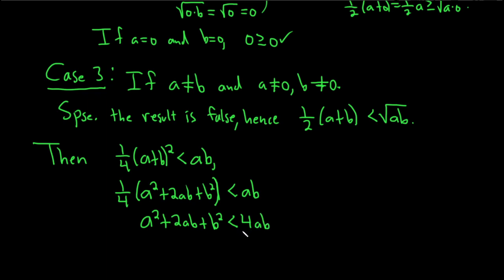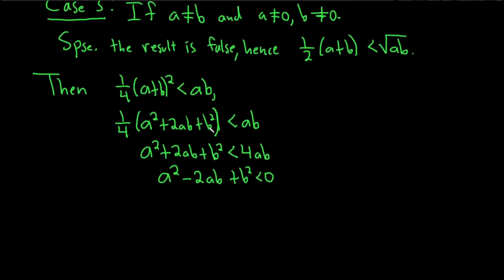Then we can subtract 4ab from both sides. That gives us a²-2ab+b² less than 0. This actually factors. This is a perfect square trinomial. This is (a-b)² less than 0, which is a contradiction, because this is being squared, so it can't be less than 0. It's impossible. So a contradiction.